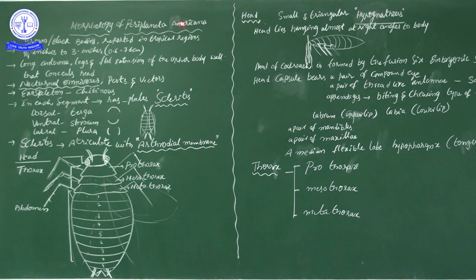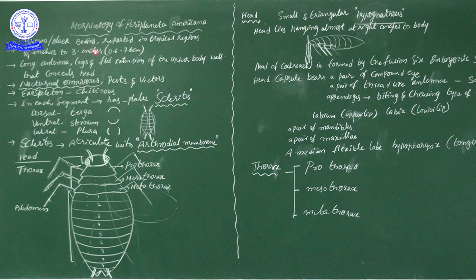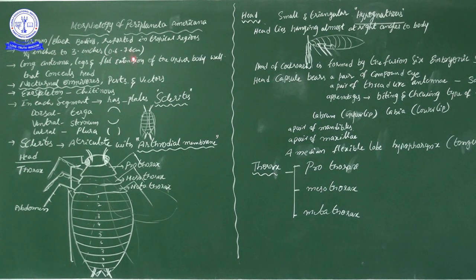Periplaneta americana was first reported or noticed in America, but later it spread throughout the world, especially in tropical regions. The size of the organism ranges from one-fourth inch to three inches, or in centimeters, from 0.6 centimeters to 7.6 centimeters.